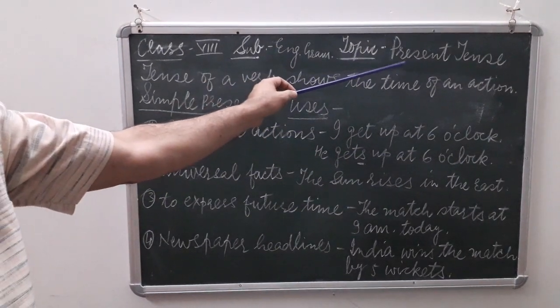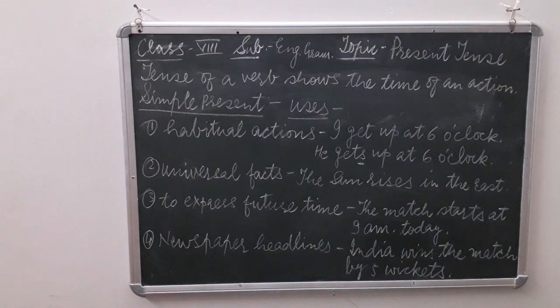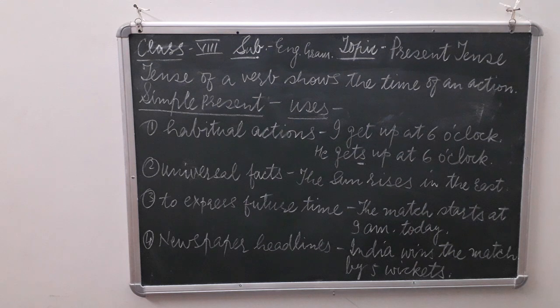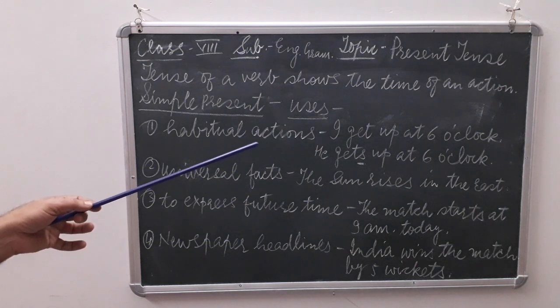Present tense is divided into four parts: simple present, present continuous, present perfect, and present perfect continuous.